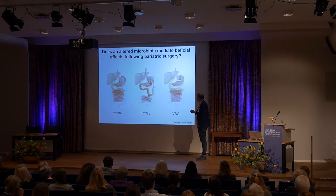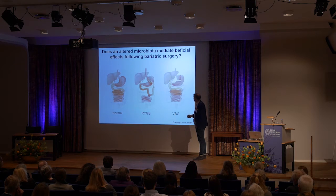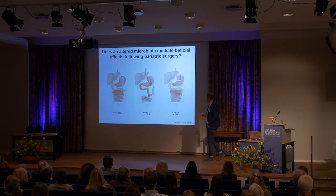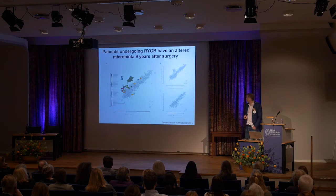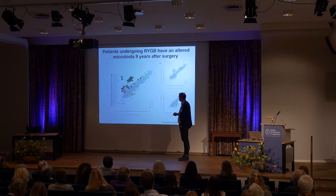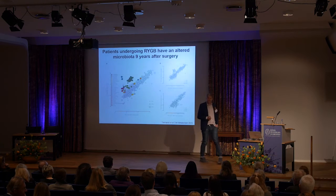In Roux-en-Y gastric bypass, you reduce the stomach to the size of a thumb and bypass the rest of the stomach and upper small intestine, connecting the jejunum straight to the stomach pouch. In vertical banding, you simply shrink the stomach. The Roux-en-Y is more efficient for maintaining lower body weight and reverting diabetes. We also had obese normal controls. Looking at taxonomy via shotgun sequencing, we found more bacteria belonging to Proteobacteria, such as Escherichia coli, in the Roux-en-Y gastric bypass patients.